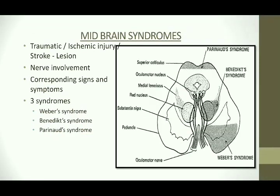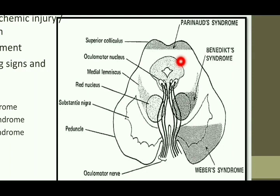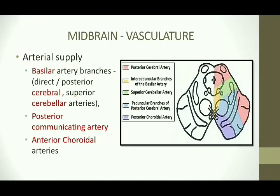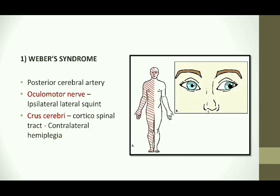Coming to the midbrain syndromes, these occur due to trauma or ischemic injury due to stroke. The lesion involves cranial nerves 3 and 4, the oculomotor and the trochlear nerve. Three syndromes are associated with the midbrain: the Weber syndrome, the Benedict syndrome, and the Parinaud syndrome. The blood supply of the midbrain is by branches of the basilar artery, the posterior communicating artery, and the anterior choroidal arteries. Weber syndrome occurs due to occlusion of the posterior cerebral artery. The oculomotor nerve is directly affected, causing ipsilateral lateral squint, and involvement of the crus cerebri, which contains the corticospinal tract, results in contralateral hemiplegia of the body.